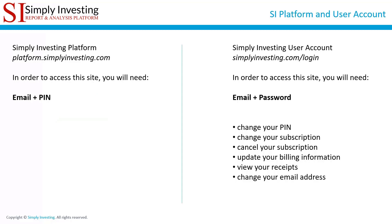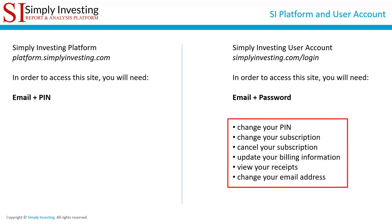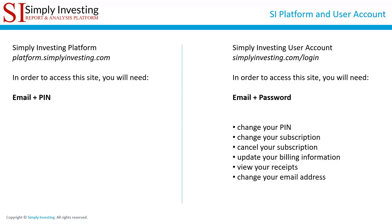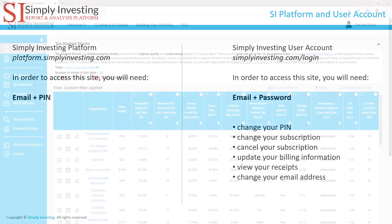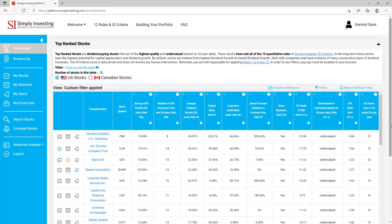A quick reminder: your email and password are needed to access your user account, and those are the things you will be able to change or update. On the left-hand side of the screen you can see email and PIN — that's what you'll need to access the platform. Remember, each time you log into the platform you will arrive at the top ranked page, and you can always come back to this page by clicking on the logo at the top left corner or clicking on 'Top Ranked' in the side menu.